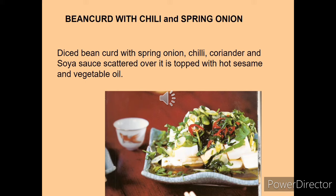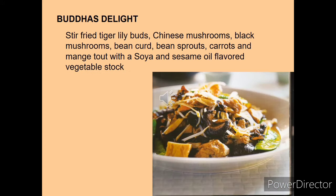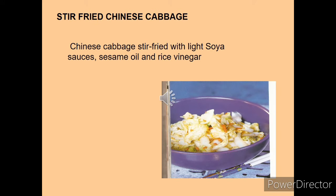Bean curd with chili and spring onion: diced bean curd with spring onion, chili, coriander and soy sauce scattered over it, topped with hot sesame and vegetable oil. Buddha's delight: stir-fried tiger lily buds, Chinese mushroom, black mushroom, bean curd, sprouts, carrots and other vegetables used for flavoring, generally cooked in vegetable stock. Stir-fried Chinese cabbage: shredded cabbage stir-fried along with vinegar, soy sauce and other ingredients in the wok.